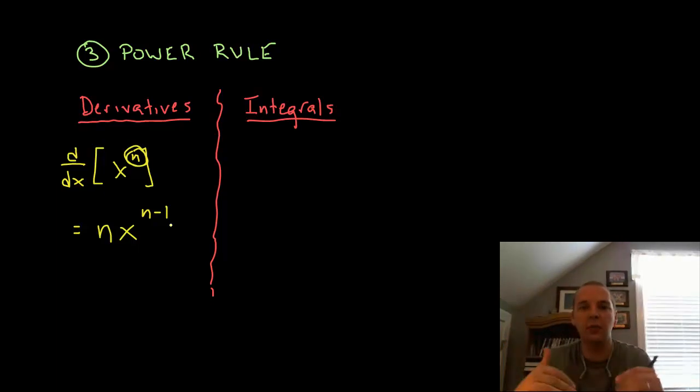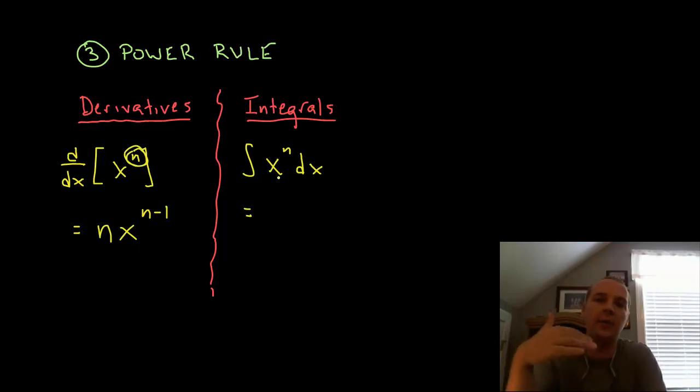But when you start thinking integrals and you start thinking what function if you took its derivative would give you x to the n? That's a different question. The exponent would have to be one higher so that when you decrease that by one you would get x to the n if you went ahead and took a derivative. So instead of going down by one it will be x to the n plus one. It will go up by one.